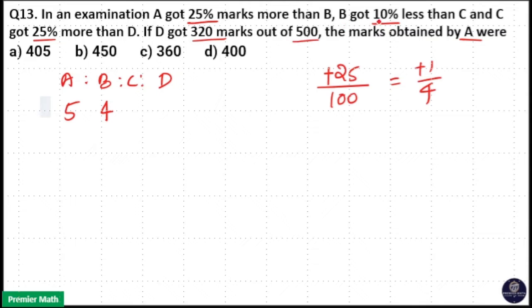Here B got 10% less than C. So 10% less means minus 10 by 100, that is minus 1 by 10. That is B got 10% less than C. That is if C get 10 marks, B will get 10 minus 1, 9 marks.